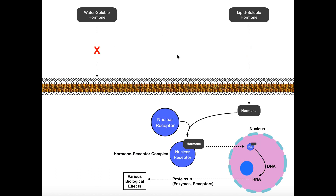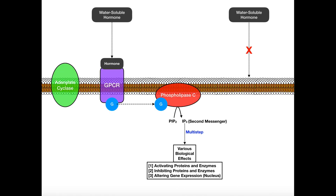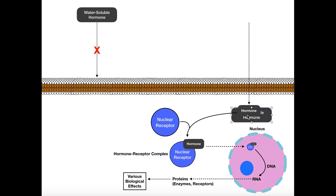What about lipid-soluble hormones? We just mentioned that water-soluble hormones cannot cross the plasma membrane because it's mostly lipid. Lipid-soluble hormones, on the other hand, are hydrophobic — neither charged nor polar, but soluble in lipids. Since the membrane is lipid-based, lipid-soluble hormones can simply cross the membrane directly. Therefore, they do not need a receptor in the membrane.